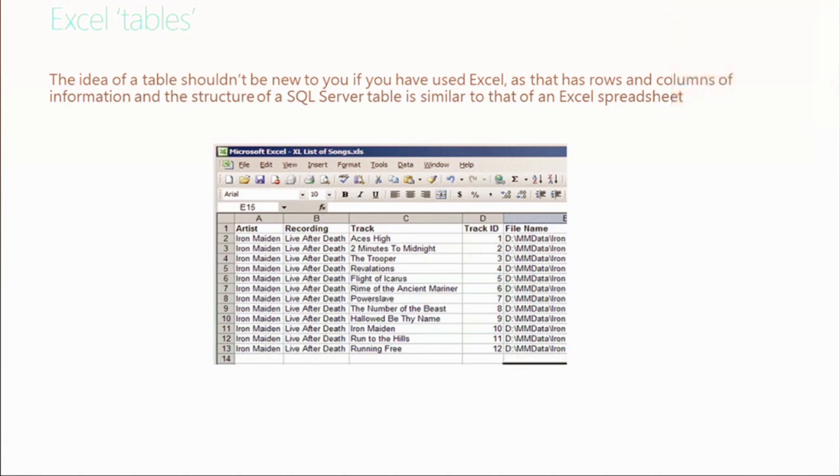I actually still use a spreadsheet today to manage my music collection — my CDs. I've got a row for every CD in my library, and then I have all of these columns. I've added columns for the person who introduced me to it, the genre of the music, and the date I acquired it. Sort of like the High Fidelity movie — if you want to sort by the date you acquired it to look at your library in chronological order, I do that.